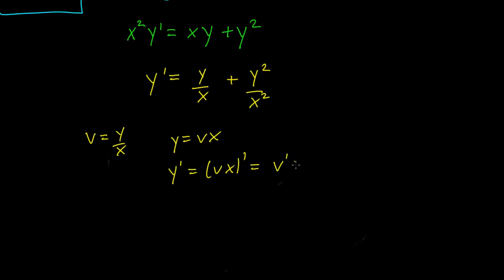This is just going to be v prime x plus v x prime. The derivative of x is just going to be 1. And we have just that y prime equals v prime x plus v.